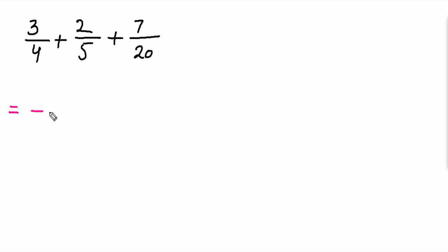3 over 4 plus 2 over 5 plus 7 over 20. I am showing you which number multiplied with 4 will make 20, that is 5, same number over here. Which number multiply with 5 that make 20 is equal to 4. And 20 will be multiplied with 1, the same.